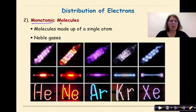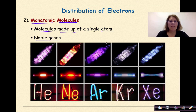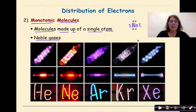The next type is a monatomic molecule. These are molecules made up of a single atom. This includes the noble gases. Each noble gas typically has eight valence electrons. For example, neon has eight valence electrons surrounding it in its outer valence shell — equal distribution of electrons — therefore it's a monatomic molecule.